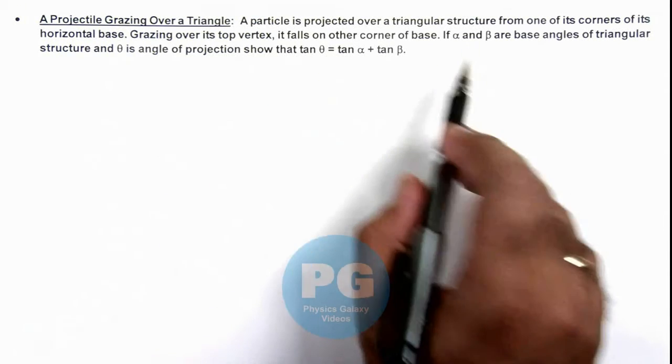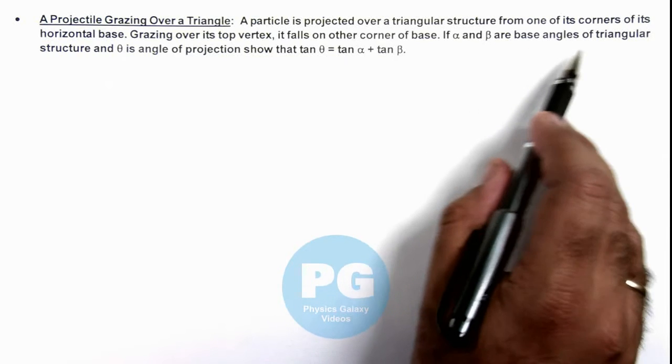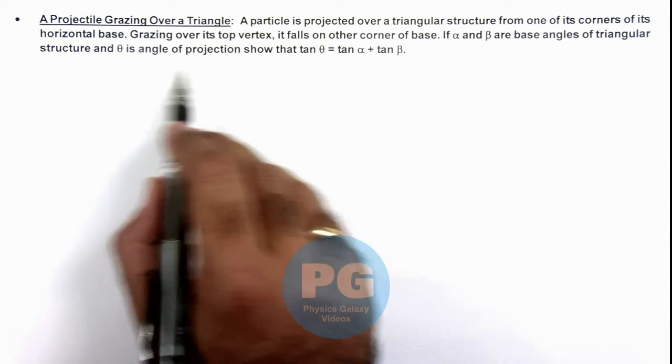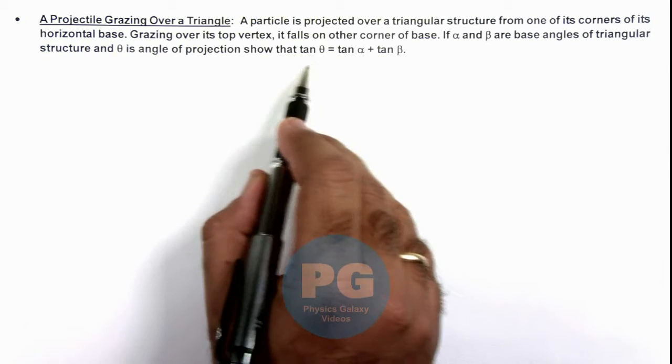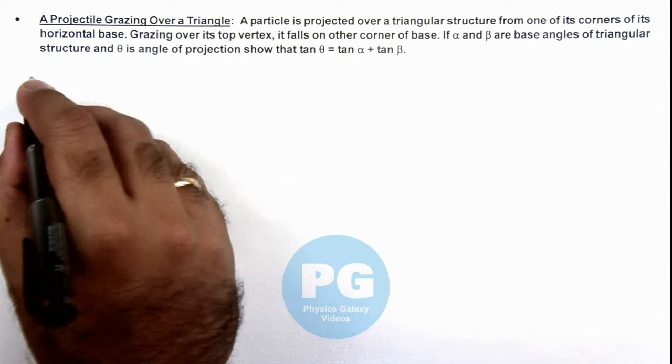Grazing over its top vertex, it falls on the other corner of base. Given that if alpha and beta are base angles of triangular structure and theta is the angle of projection, we need to show that tan theta is tan alpha plus tan beta.